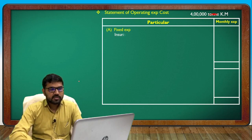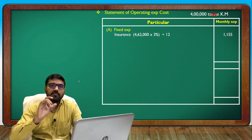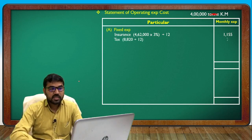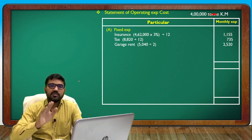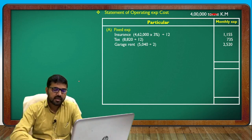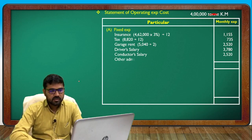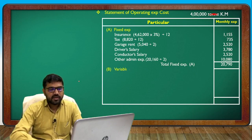Fixed expenses include insurance — bus cost at 3% divided by 12 — plus tax of 8,820 annual divided by 12, garage rent 5,040, driver salary each month, conductor salary each bus each month, and other admin expenses converted. Total fixed expense calculated.